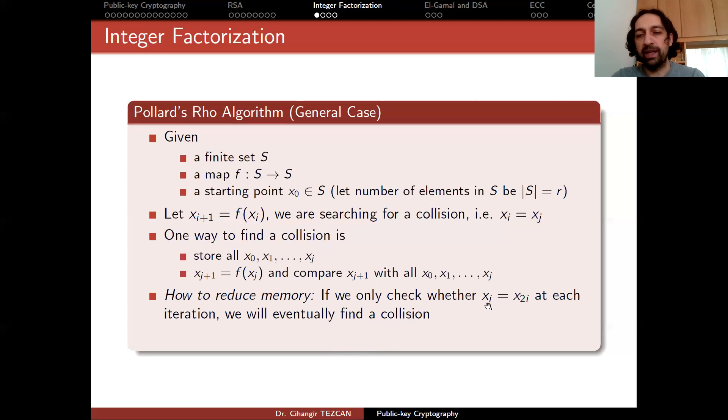How to reduce the memory? If you only check whether x_i equals to x_{2i} at each iteration. So you're not actually storing all of the values. Instead, you are simply looking at x_i and x_{2i}. And we will eventually find a collision. So this is actually a time memory tradeoff. So we reduce memory. But in order to obtain such a collision, we have to perform more operations. And sometimes this approach is referred to as baby step, giant step, because here you are taking a baby step. You are increasing i one by one. But this is incremented twice. So you are taking a giant steps here and taking baby steps here. And eventually you will find a collision. So this algorithm has complexity of square root of r in the big O notation. So in this way you can find a collision. So as you can see, this is for a hash function. And this is like same complexity with the birthday paradox.